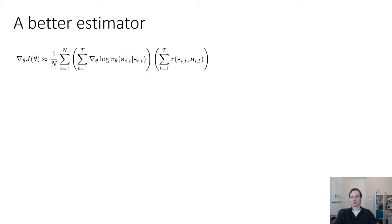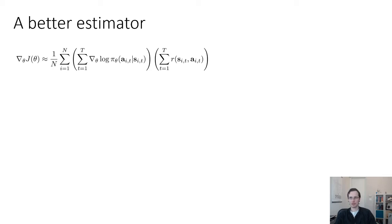The first thing we're going to do is improve the policy gradient estimator a little bit. The trouble with the estimator discussed so far is that it doesn't utilize any knowledge about the temporal structure of the problem. We're taking the sum of the gradients of the log probabilities of all the actions and multiplying it by the sum of all of the rewards. This doesn't account for the fact that future actions can't influence past rewards. This formula for the gradient would be true for any factorization of the distribution — it's a general gradient estimator, not specific to sequential decision-making.